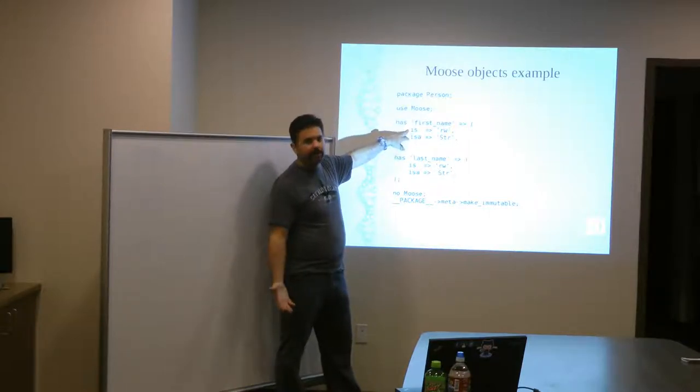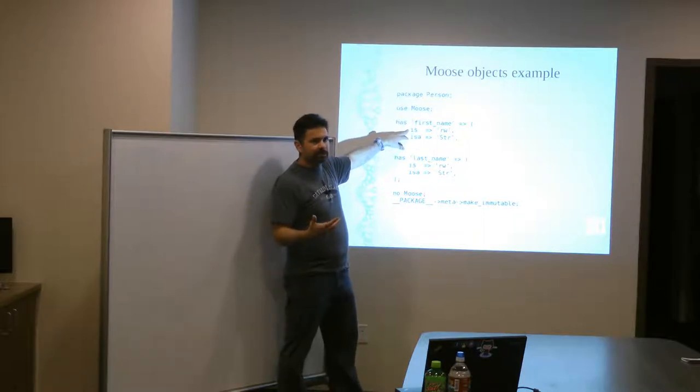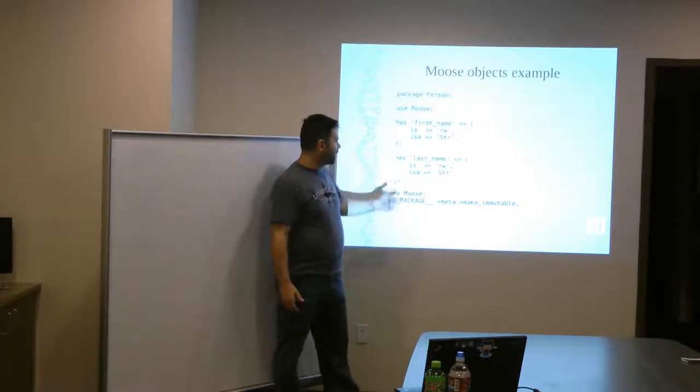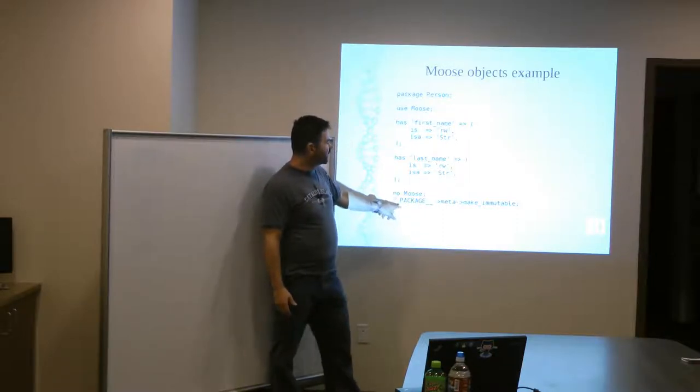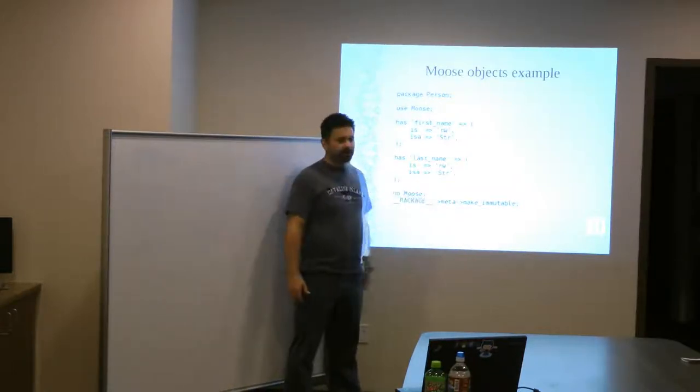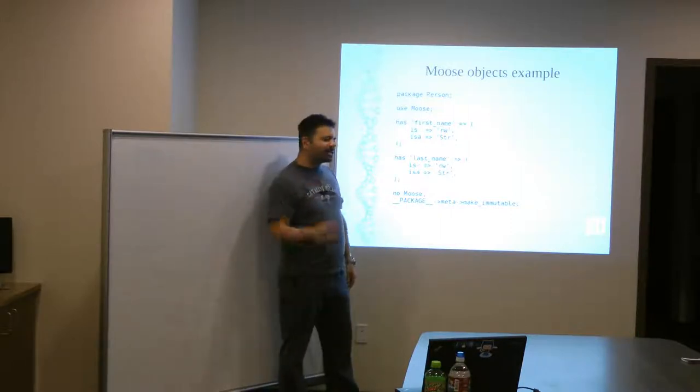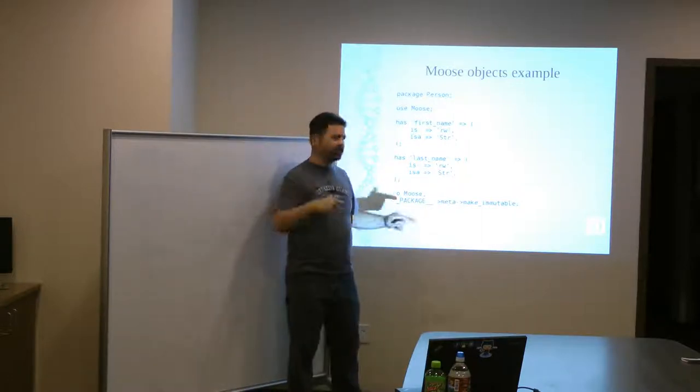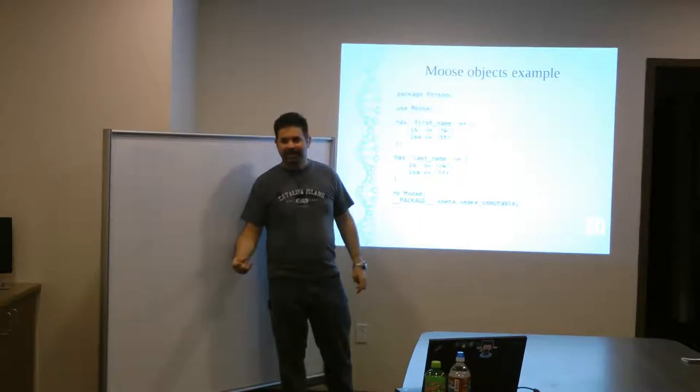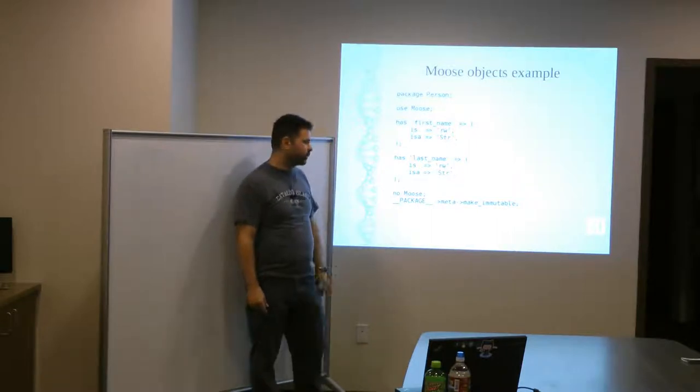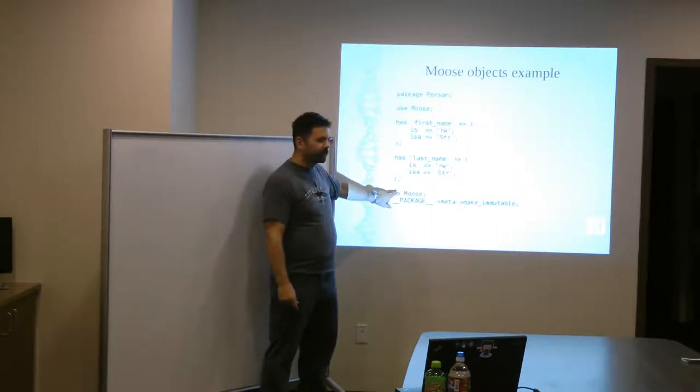And then down here we specify some characteristics. Well, it's read and write. So that means we can change it after we initialize it. And here's some holy cow type constraints. It's a string. Same thing with last name. I'm not going to talk about this stuff down here, except to say that this make immutable thing speeds up Moose quite a bit. So if you don't have that, your startup overhead will be even worse. And actually, I take that back. I think this actually makes your startup overhead worse than if you didn't have it, but your run time is faster. So that's why they say put it in there because it'll make your programs run faster. And I don't know. I don't remember what the NoMoose does. Any questions about that?